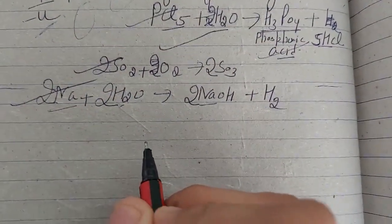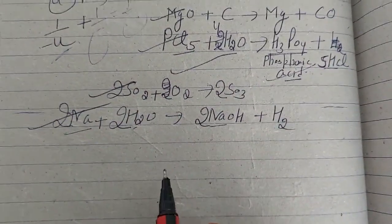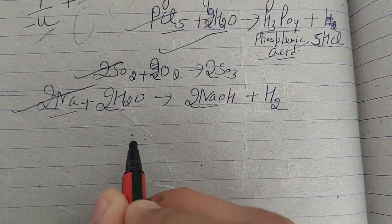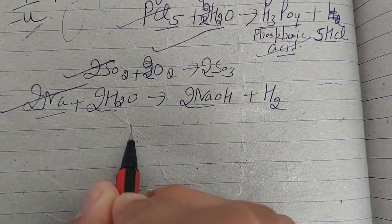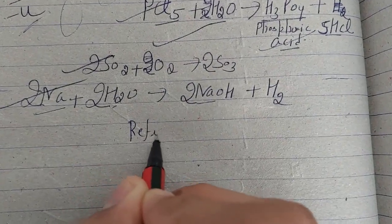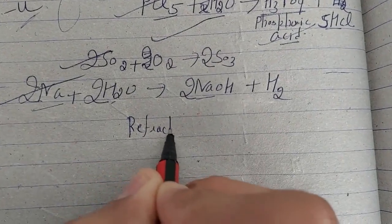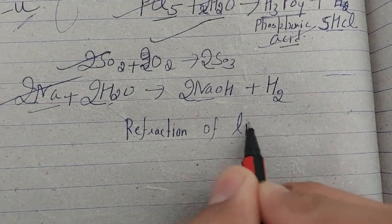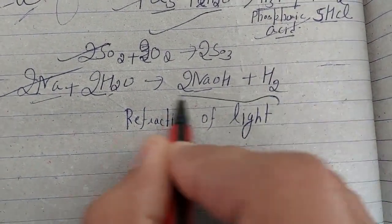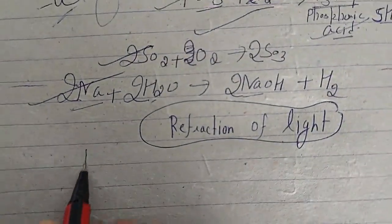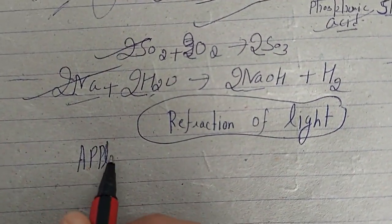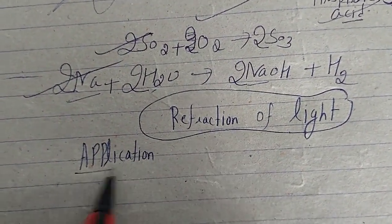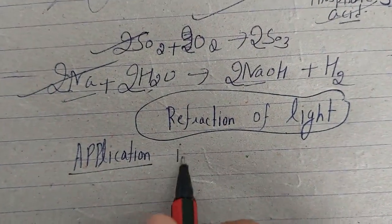Good morning students. We are continuing with our next lecture of physics. We are talking about refraction through a glass slab — that means we are talking about the refraction of light. We will discuss one of its applications: how refraction of light is applicable in daily life conditions.